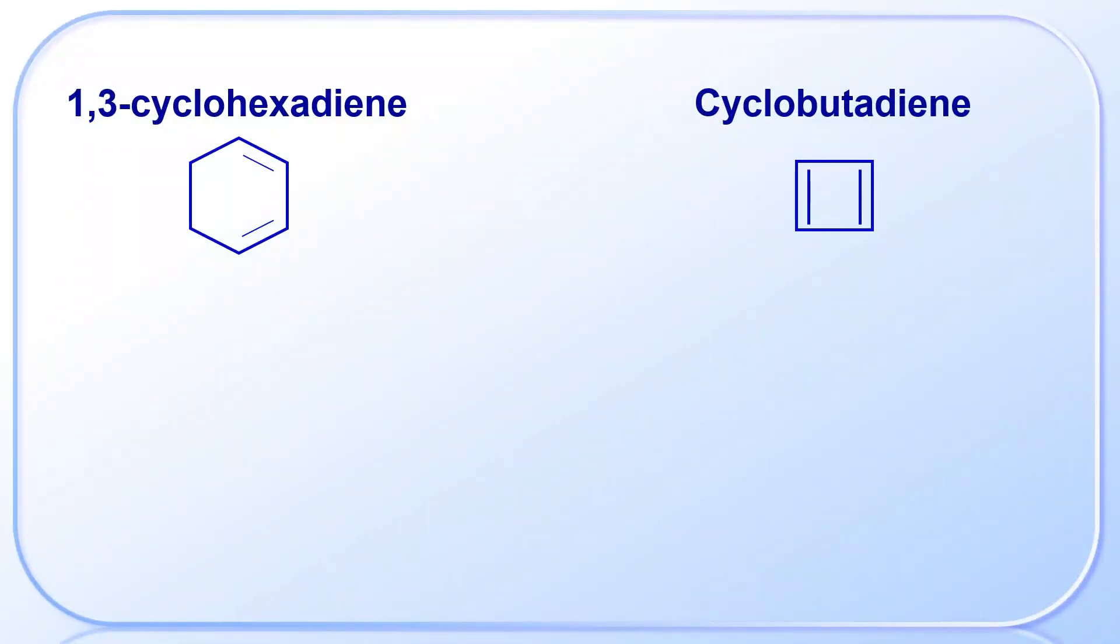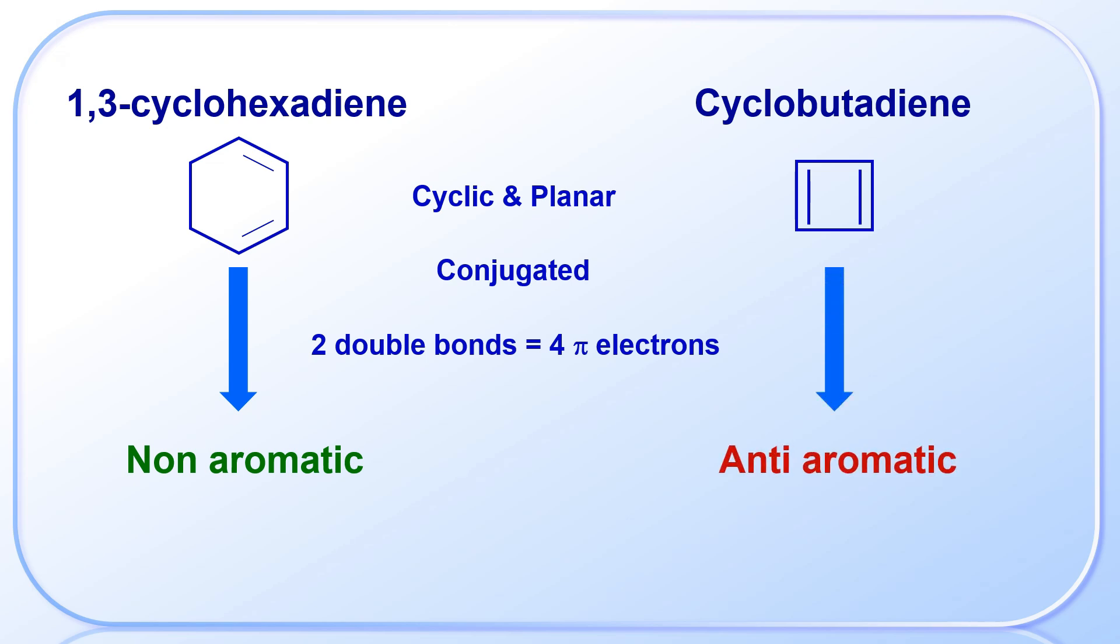Let us compare both the molecules. Both are cyclic and planar, with two alternate double bonds in conjugation. There are 4 pi-electrons. Yet, 1,3-cyclohexadiene is non-aromatic, while cyclobutadiene is anti-aromatic. It is because in 1,3-cyclohexadiene, there is no closed loop of delocalized pi-electrons. The conjugation does not extend across the ring. Hence, it is non-aromatic.